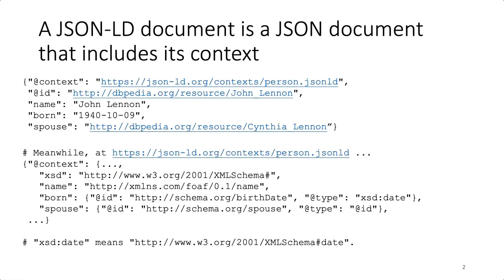There are many standard serializations for linked data. One of them is JSON-LD, where the LD stands for linked data. Using JavaScript Object Notation, or JSON, to serialize data is quite popular. A JSON-LD document is a JSON document that includes its context. The document makes statements about a resource identified by the value of the @id key. That value is a uniform resource identifier, or URI, under a different namespace at the dbpedia.org domain, with different governance than JSON-LD.org, and that's okay. The JSON-LD document has another special key, @context, that links to its context to help a human and their machine agents to understand the meaning and formatting of this JSON document.